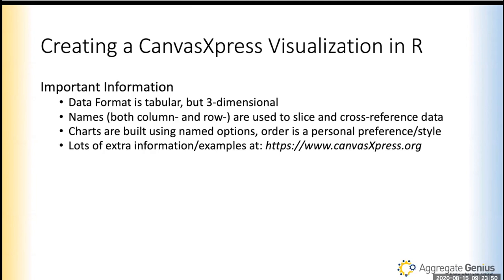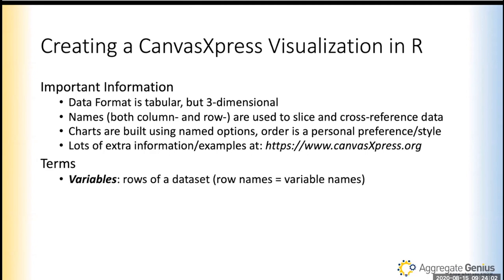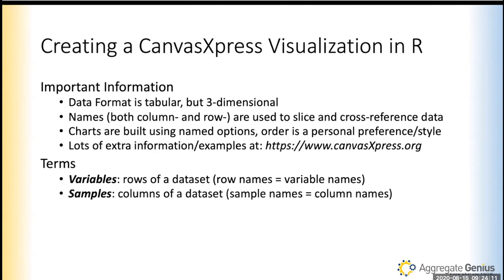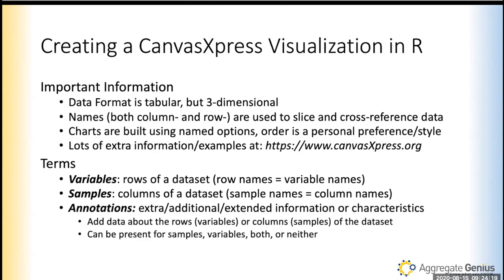The website is super rich — it has full API documentation and tons of examples. Each example has JavaScript, JSON, and R code. You can grab it right out of the web page, drop it into RStudio, and create the same chart. There are some key terms: variables are the rows, and samples are the columns. Annotations is extra information you can add about the rows or columns of the dataset.